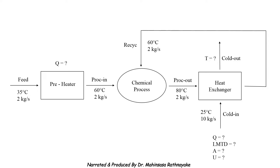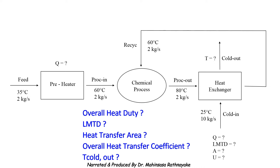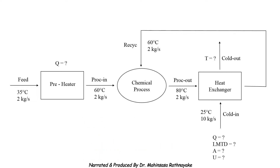It is a good habit to sketch our process flow sheet before starting the Aspen Plus simulation. We sketch the preheater with a feed of 2 kilograms per second at 35 degrees Celsius. The outlet stream from the preheater is the inlet to the chemical process at 60 degrees Celsius. The process outlet stream at 80 degrees Celsius feeds the heat exchanger, whose hot outlet at 60 degrees Celsius is the recycle stream. The cold water inlet is at 25 degrees Celsius and 10 kilograms per second. We need to find the overall heat duty, LMTD, heat transfer area, overall heat transfer coefficient, and the cold water outlet temperature.